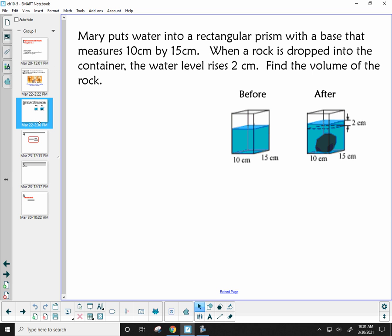Here's an example. Mary puts water into a rectangular prism with a base that measures 10 cm by 15 cm. When a rock is dropped into the container, the water level rises 2 cm. Find the volume of the rock.